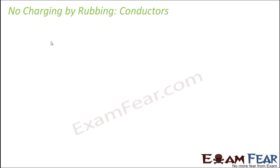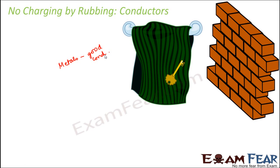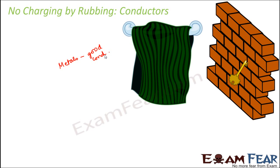Conductors cannot be charged by rubbing. If you take a towel and a metal key — metals are good conductors and they allow charges to flow through them — and you rub the key on the towel, unlike a balloon rubbed on a towel which sticks to the wall, the key does not stick to the wall. The key falls back, so there is no attraction between the key and the wall.